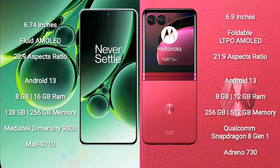OnePlus Nord 3 runs on the Android 13 operating system. It comes with 8GB or 16GB RAM and 128GB or 256GB internal storage, powered by a MediaTek Dimensity 9000 processor and Mali-G710 GPU.